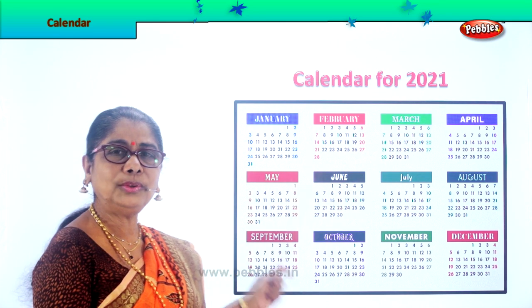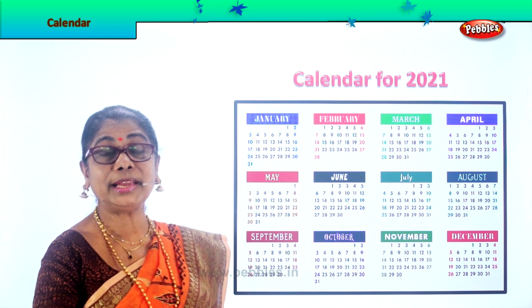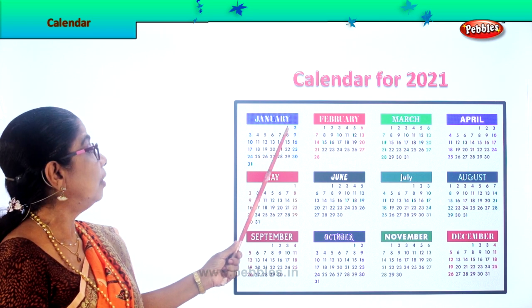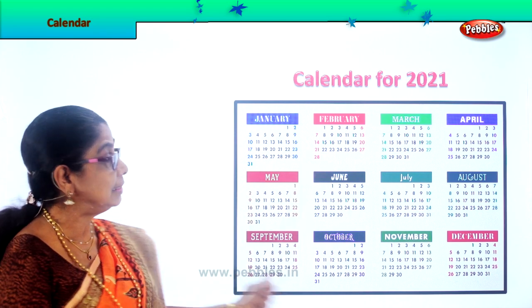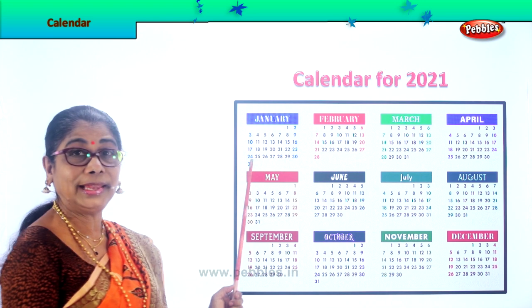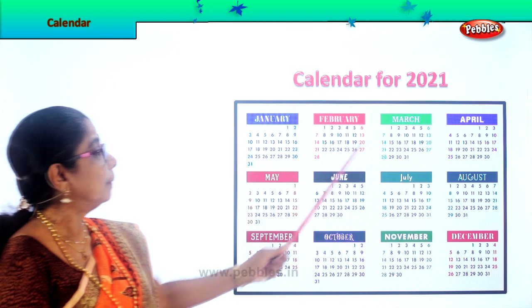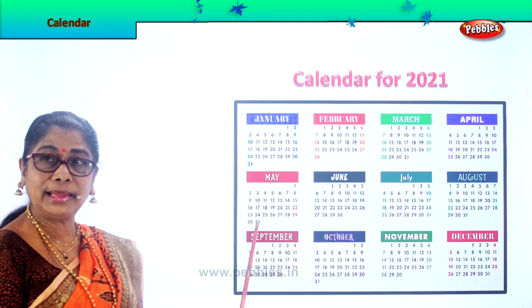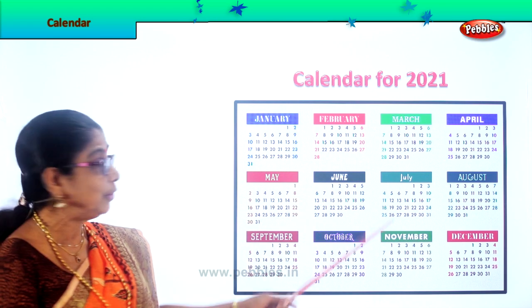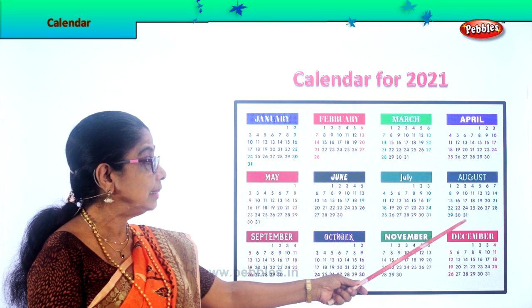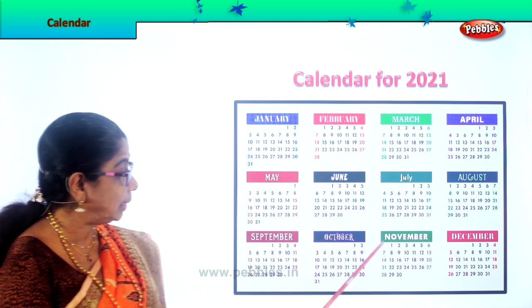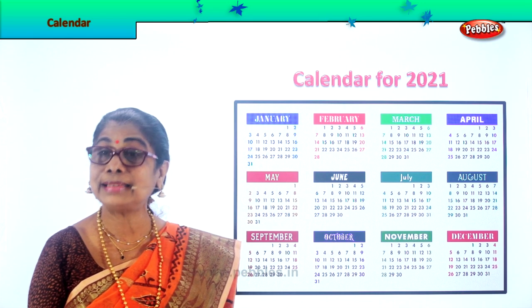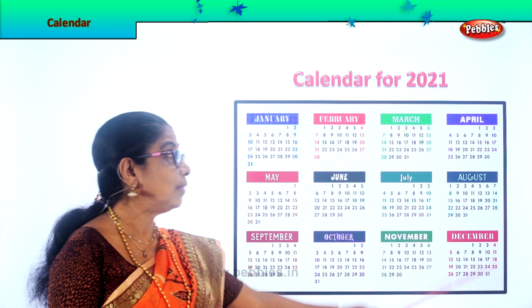Every year they have to make a new set of calendar because the days change. Now here you have January — it begins first on a Friday. This is the layout of 12 months: January 31 days, February 28 days, March 31 days, April 30 days, May 31 days, June 30 days — remember you did it? July 31 days, August 31 days, September 30 days, October 31 days, November 30 days, and December 31 days. This is the calendar, the 12 months — see how colorful and nice it looks.